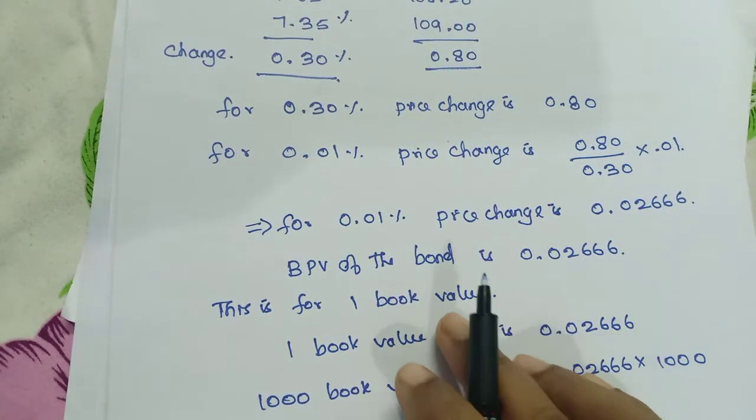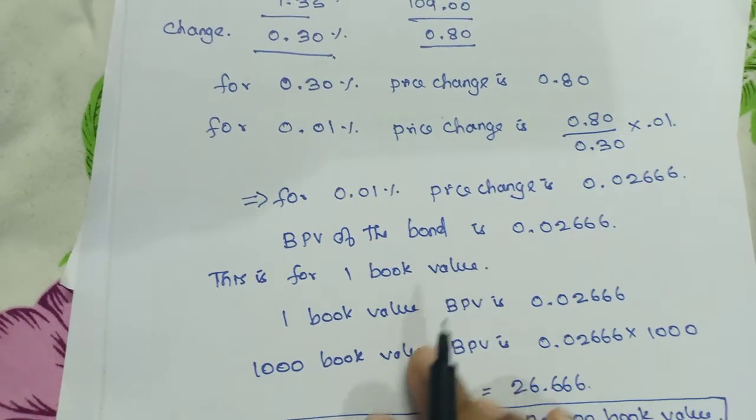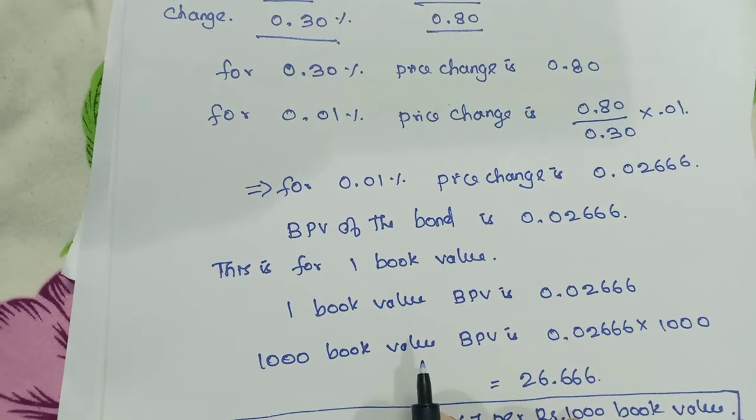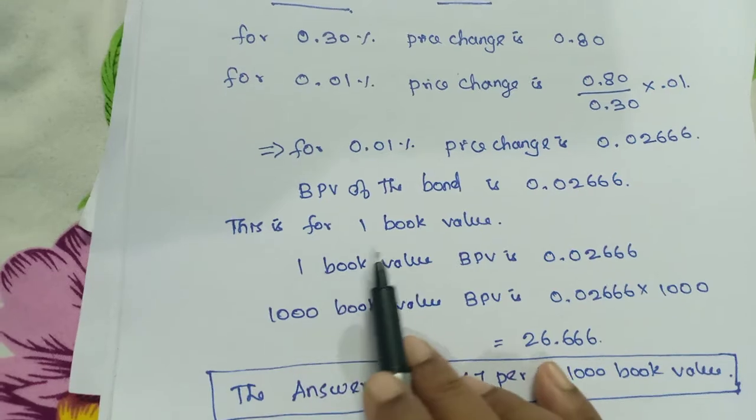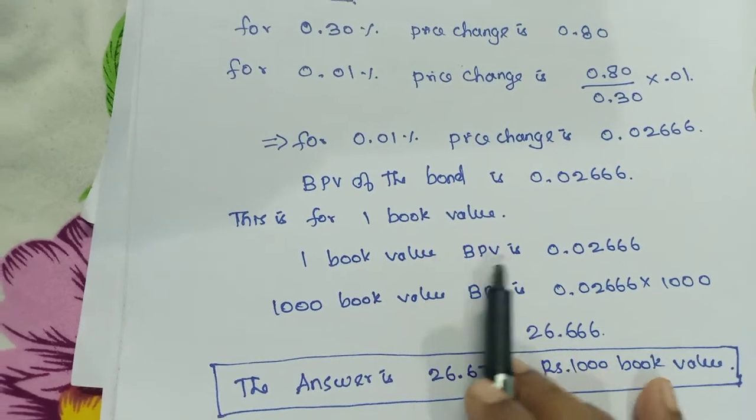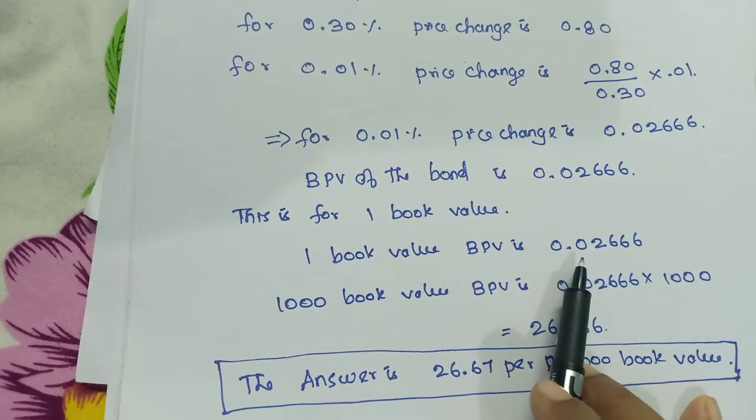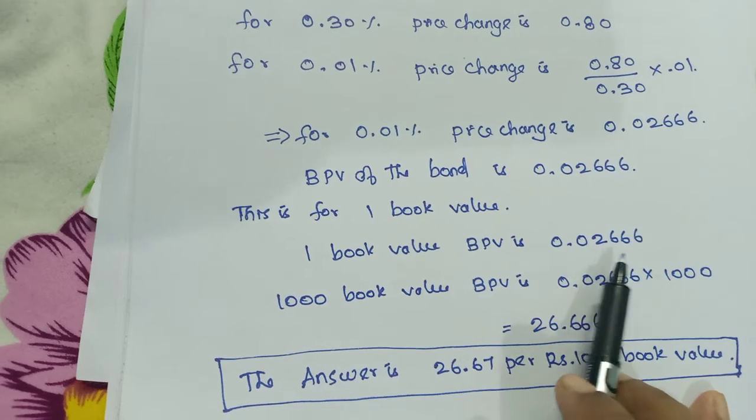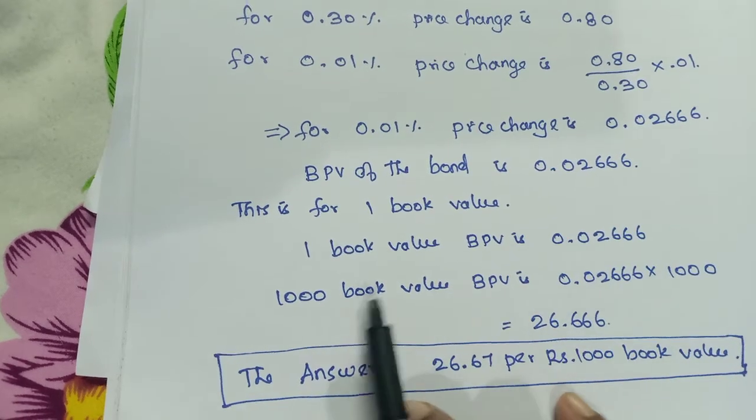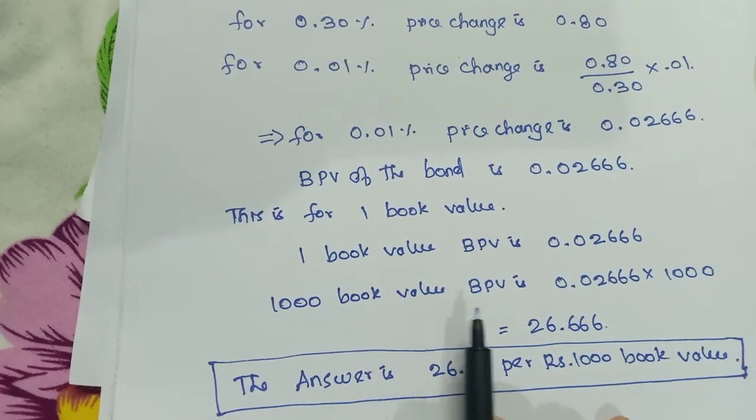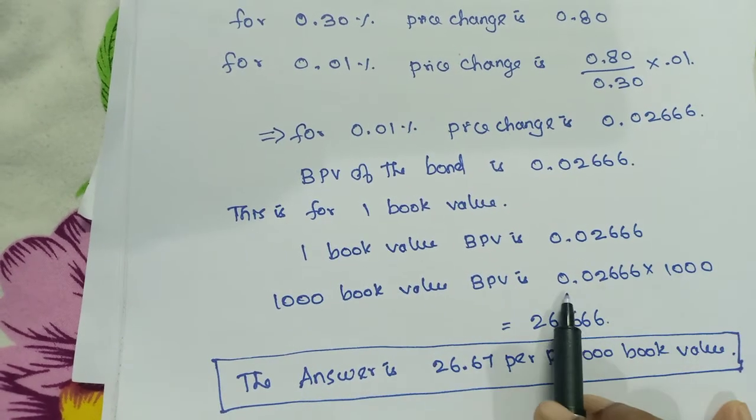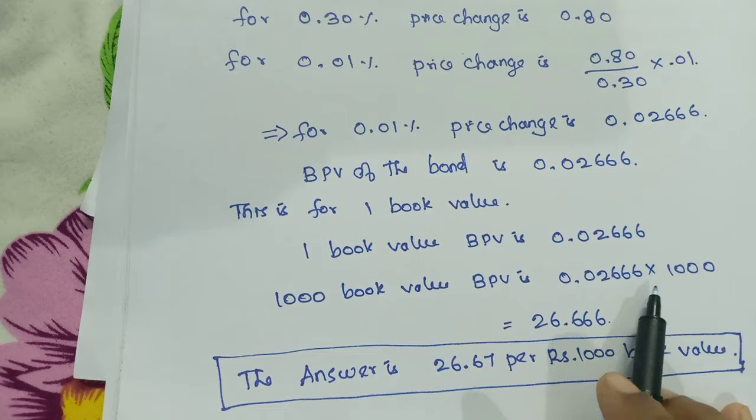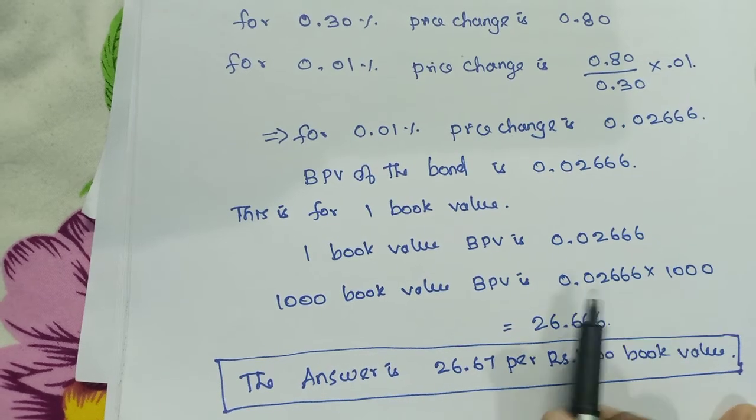Actually this is the BPV of the bond. Furthermore I want to get the value for 1000 book value. So for one book value the BPV is 0.02666. So for 1000 book value the BPV is - I am just multiplying 0.02666 into 1000 which gives 26.666.